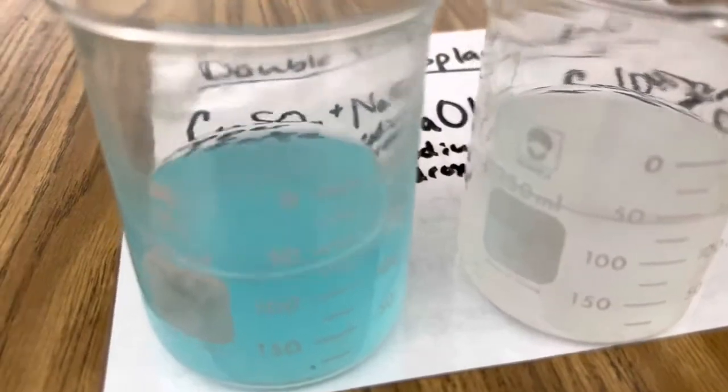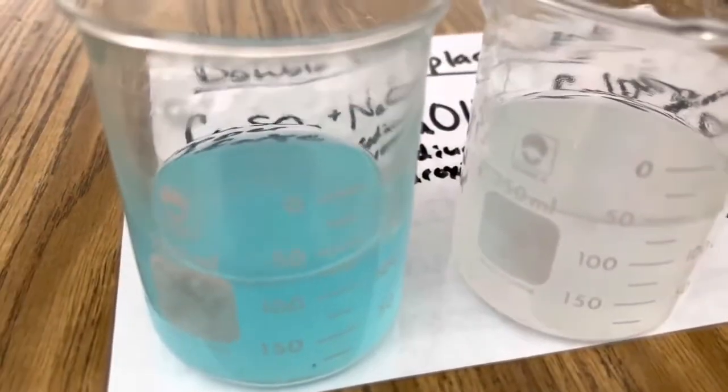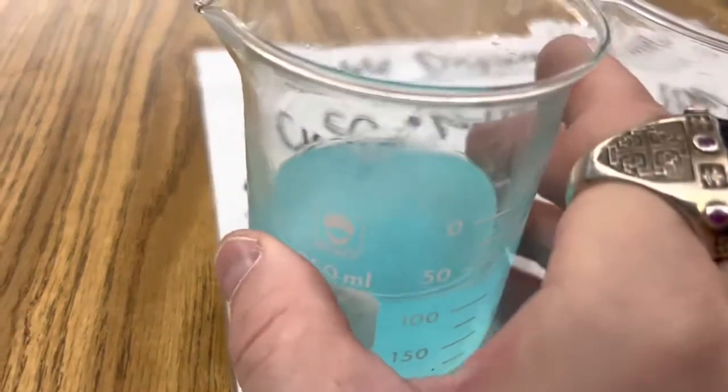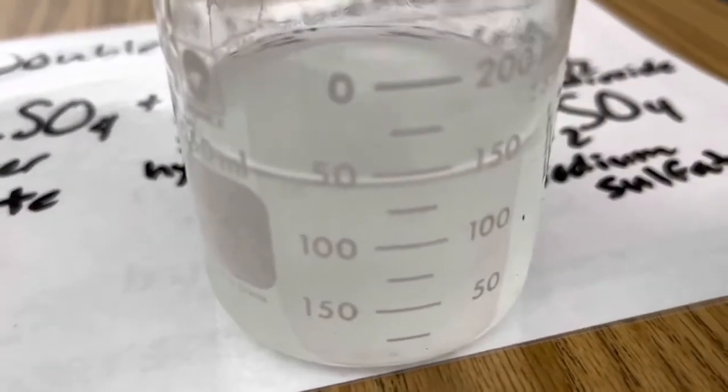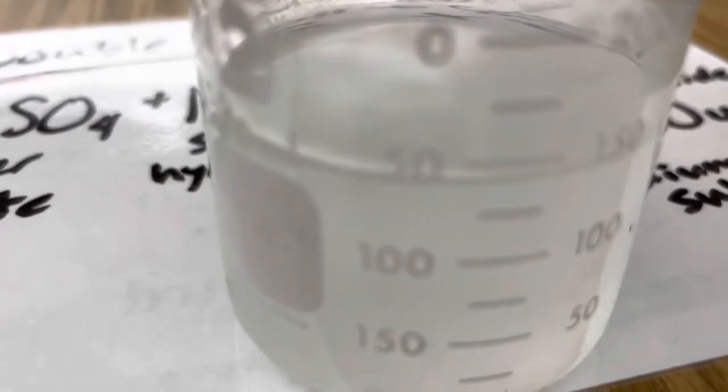Okay, once your copper sulfate is dissolved in the solution, your sodium hydroxide is completely dissolved, you're ready to slowly add your copper sulfate into your sodium hydroxide, and you'll see this blue gelatinous precipitant, which is the copper hydroxide that immediately forms when you add the two.